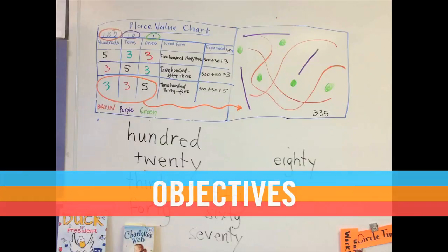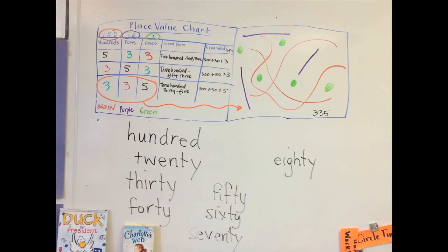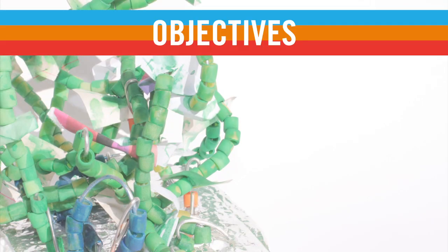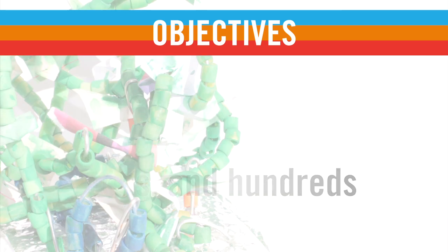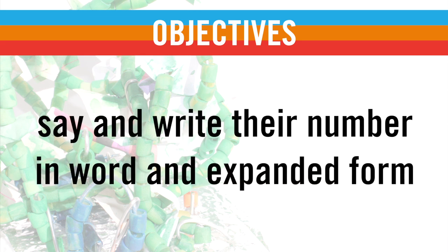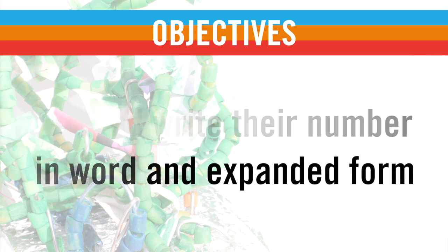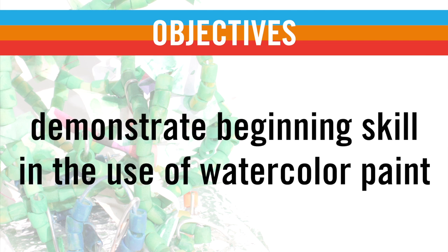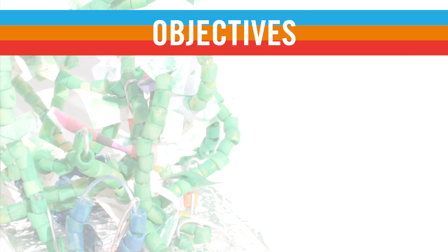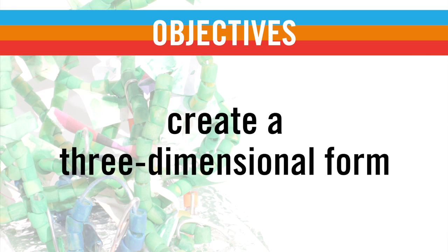Over the course of this lesson, which we have broken into three 90-minute sessions, your second grade students will be able to count to a given number in groups of ones, tens, and hundreds, say and write their number in word and expanded form, demonstrate beginning skill in the use of watercolor paint, and create a three-dimensional form.